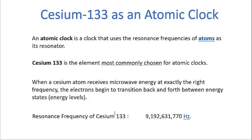This value is exact with no decimal places, because the second in the NIST — the National Institute of Standards and Technology — international standard is set to exactly this value. So this frequency is the same as saying one second: 9,192,631,770 hertz is exactly one second.